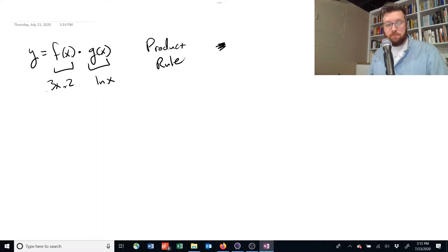So a more complicated function, as an example, would be like 3x plus 2 multiplied by the natural log of x. Now we know how to take the derivative of this f of x, we know how to take the derivative of g of x. But when they're multiplied together, we need to use a special rule,